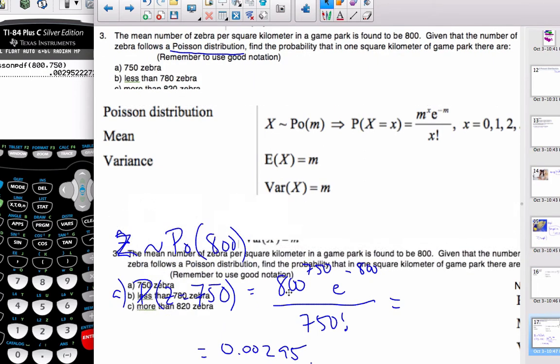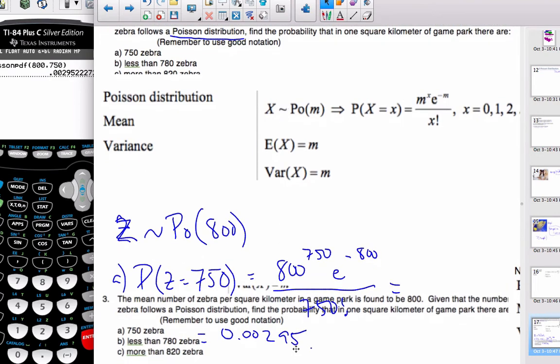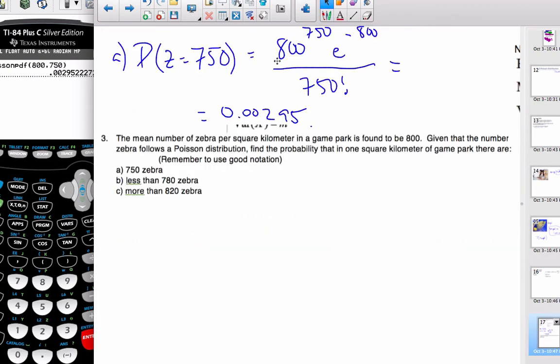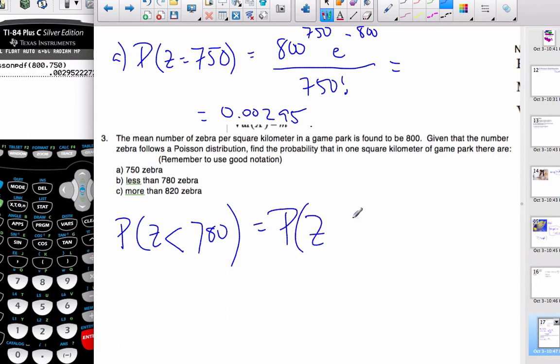Moving along with this problem, let's consider when we have less than 780 zebras. We're looking for the probability that Z is less than 780. The way the Poisson works in the calculator, I can't actually go up to 780. That's the same thing as saying Z is less than or equal to 779. Because it's less than, I'm not allowed to have 780.